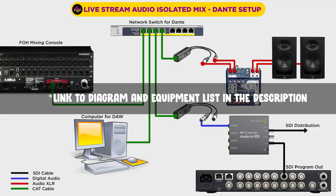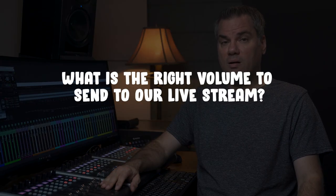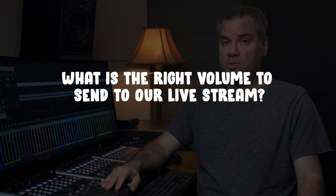In this video, we're going to continue to use the setup that we've created with an isolated mix in our DAW. If you want to see how this is all set up, I'd suggest you go back and watch the second video in this series. And then in the third, fourth, and fifth videos, we created all of our routing and added plugins in Reaper, which is the DAW I'm using. In this video, we're going to answer the question: what is the right volume to send to our livestream, and how do we accomplish that?